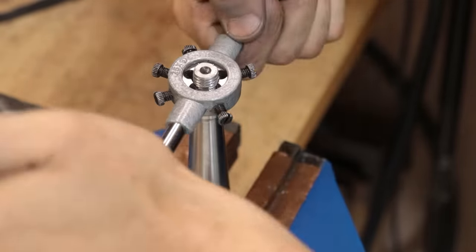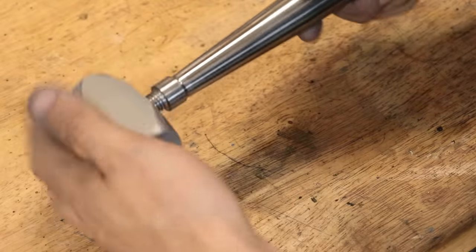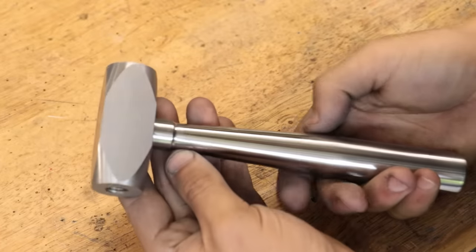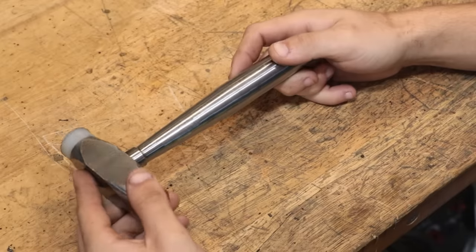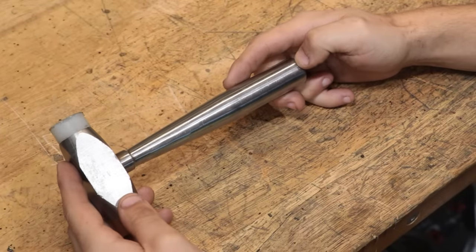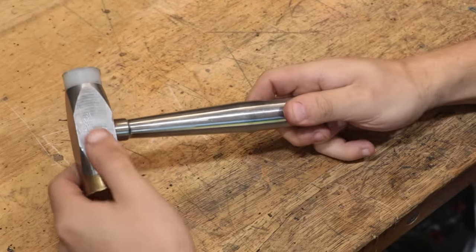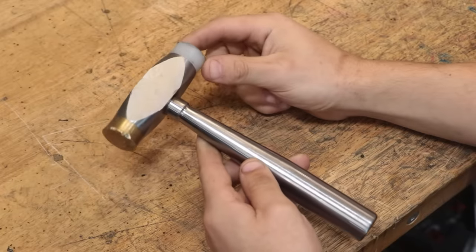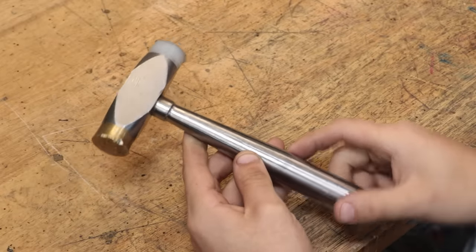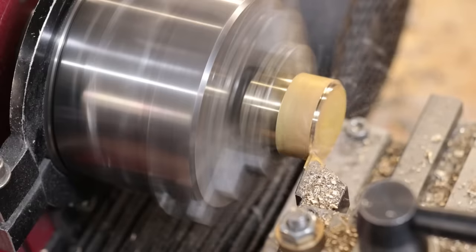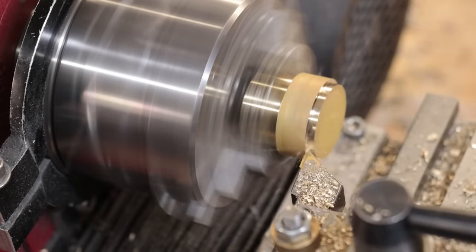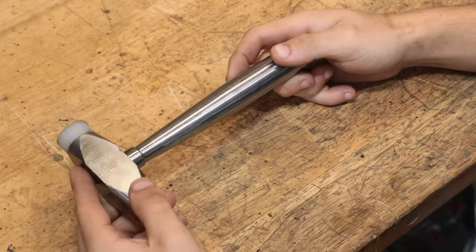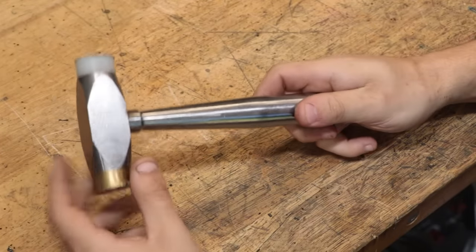Then all you have to do is thread the handle and then screw it into the head and then just lock tight the part in place. Now obviously on a proper hammer, you wouldn't want threads holding these two parts together. But here, as a machinist hammer, you're not going to be hammering all that hard, so threads will work just fine. The only change that I would make if I was to make this again is I'd rather use copper rather than brass. It's just a little bit softer and it works a little bit better.